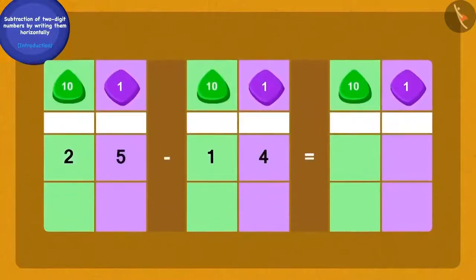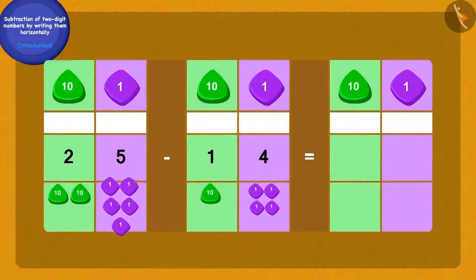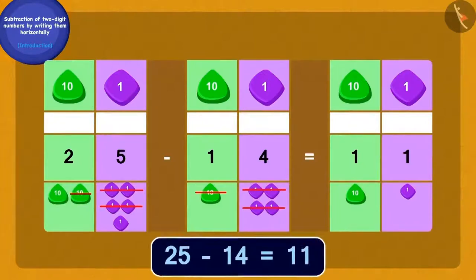Then Bablu told him, I will write 25 and 14 as tens and ones in this way. If I subtract the 4 ones of 14 from the 5 ones of 25, how many ones are we left with? One ones. And now what should we do? Absolutely correct. If we subtract the 1 tenth of 14 from the 2 tenths of 25, then how many tenths will we be left with? One tenth. In this way, Chanda's yellow flower garland has 11 more flowers than her garland of red flowers.